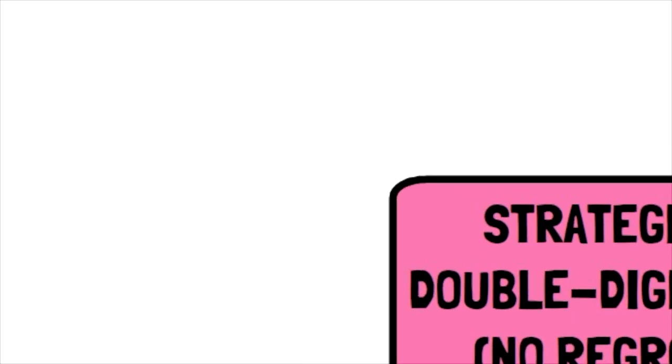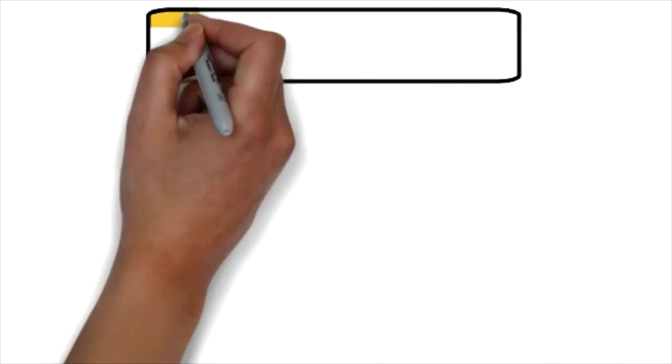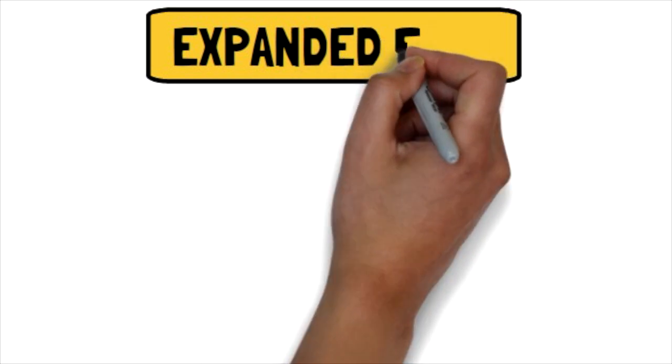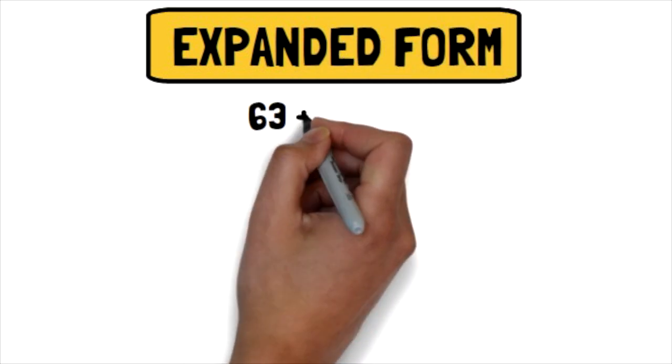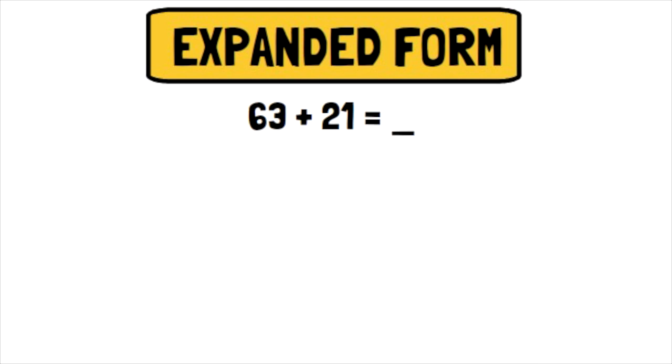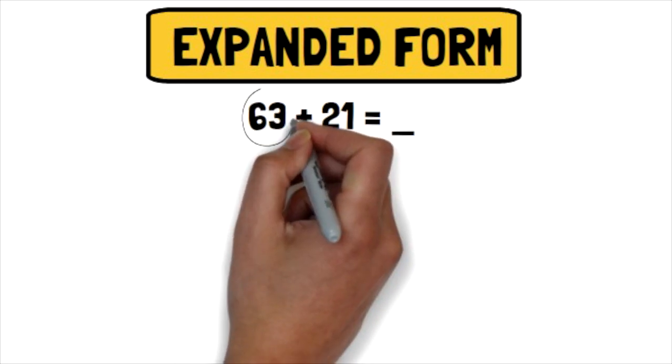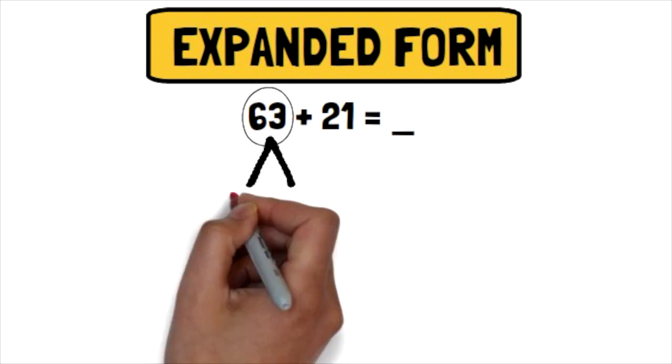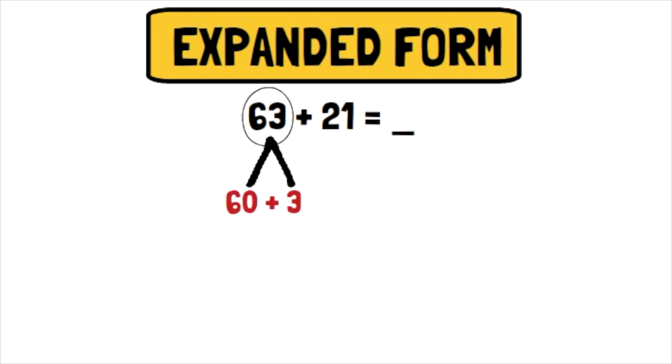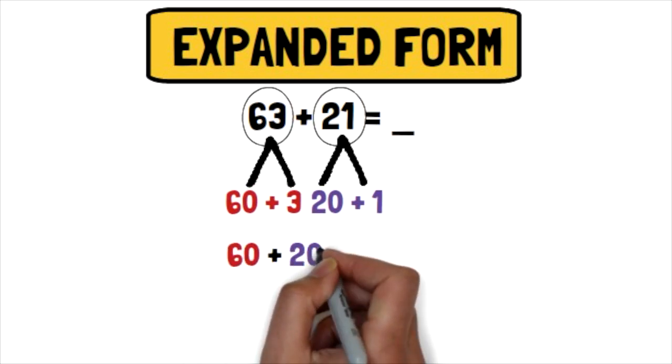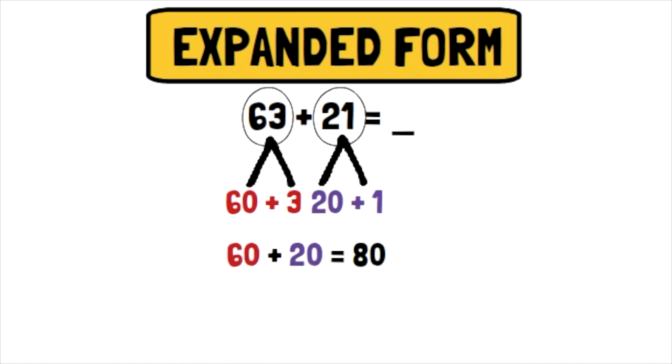The first strategy I want to share with you is expanded form. What expanded form is, is basically taking the double-digit equation and breaking it into groups of tens and ones. So, for example, if I have the equation 63 plus 21, I would break 63 into its group of tens and ones, which would make it 60 plus 3. If I took 21, the 21 would be broken down into 20 plus 1. From here, I would take the two numbers that were broken into tens, 60 and 20, and I would add those two together to get 80.